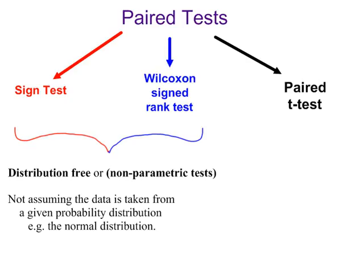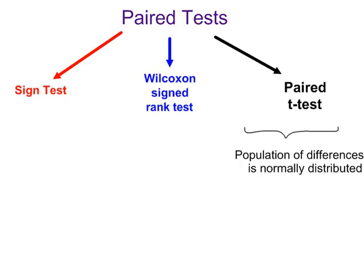The sign test and Wilcoxon test are referred to as distribution free or non-parametric tests. We are not assuming the data is taken from a given probability distribution, so for example, we don't have to assume that the population of differences will be normally distributed. Whereas with the paired T-test, we are assuming that the population of differences is normally distributed.